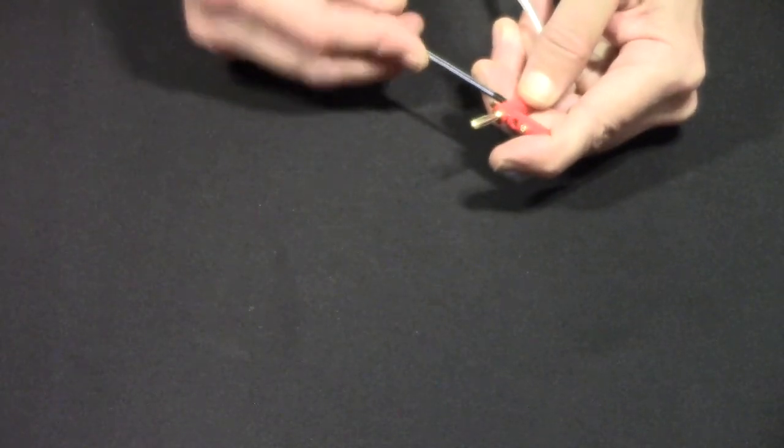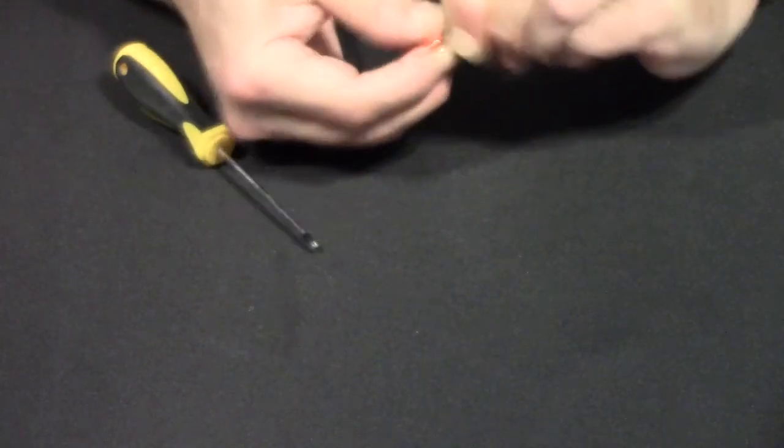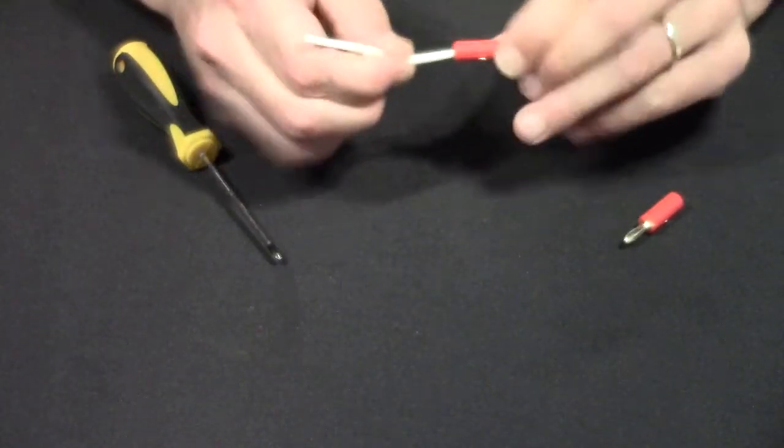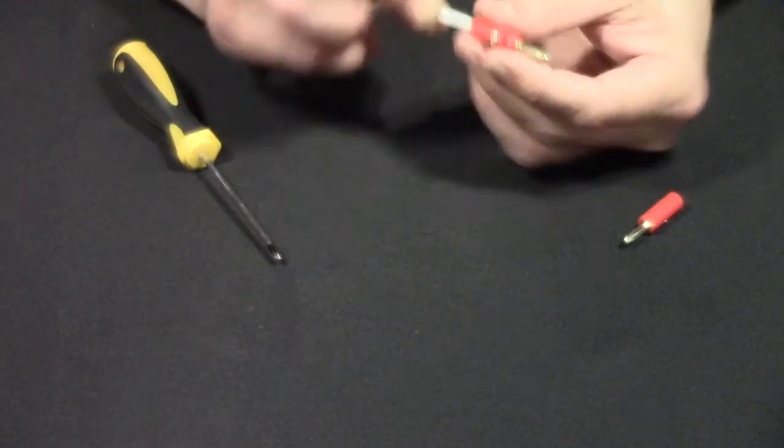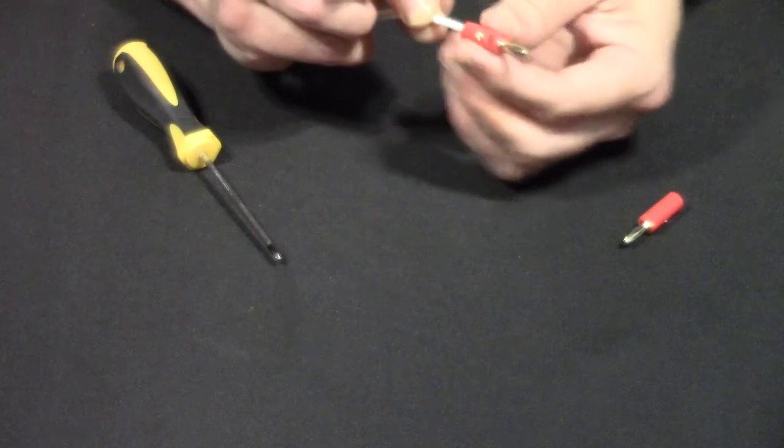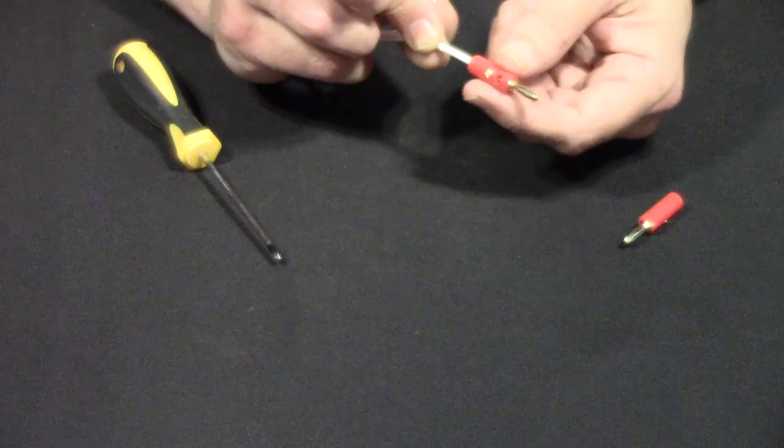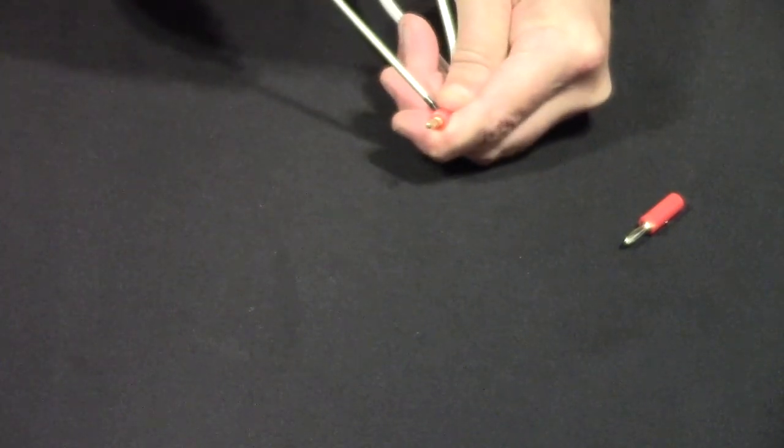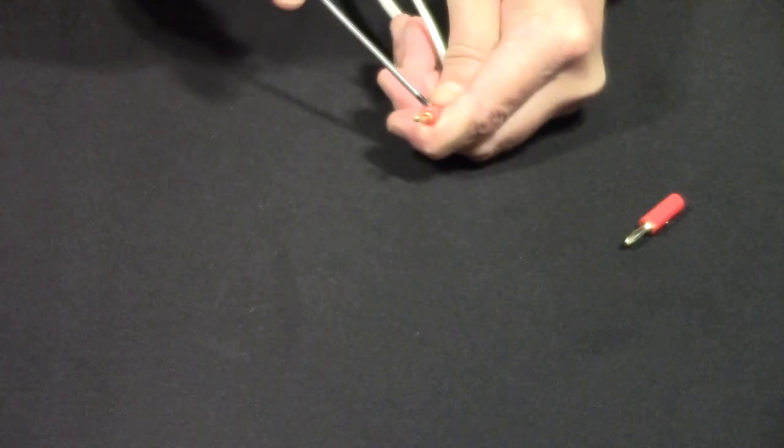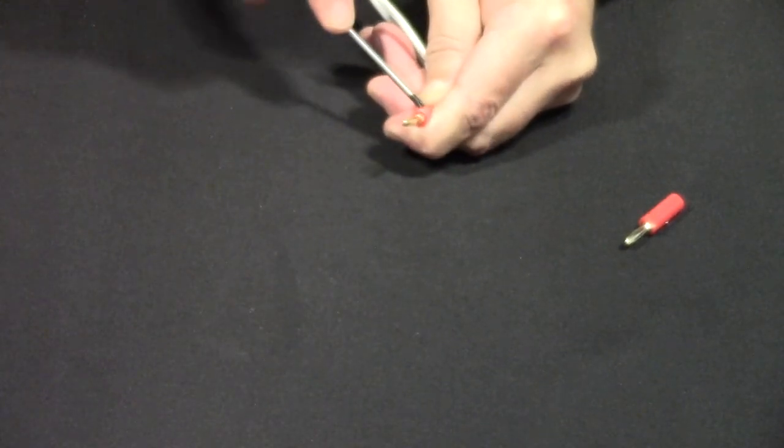But once you got that sucker in there, you're good to go. That sucker is not coming out of there. It's nice and snug. You may have a little play on the insulator, but that's just moving back and forth against the screw. But crank it down best you can. That sucker is not coming out of there.